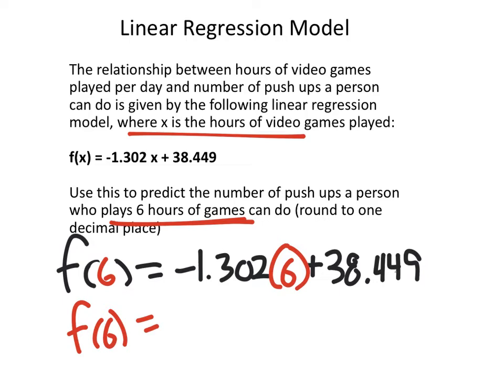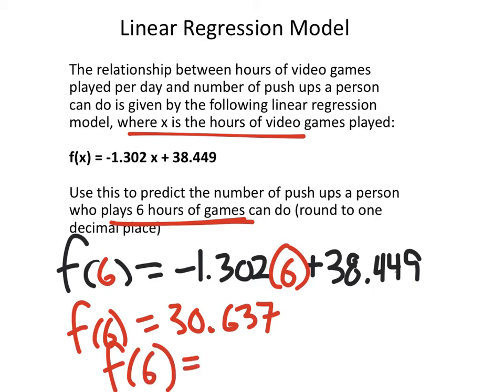Let's put that in the calculator: negative 0.302 times 6 plus 38.449. The calculator gives us 30.637, and rounded to one decimal place that's 30.6. I don't actually know what a point six of a push-up looks like, but that's what they want.